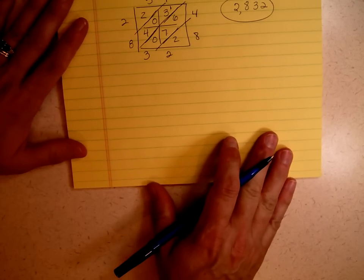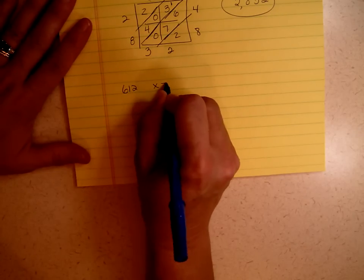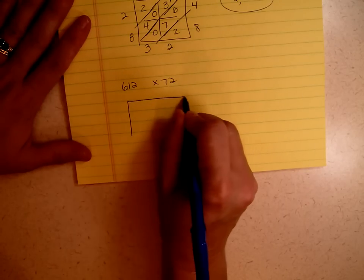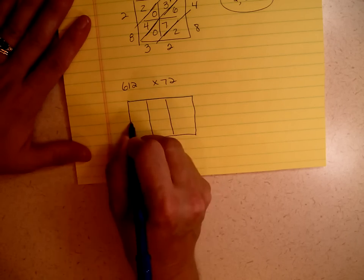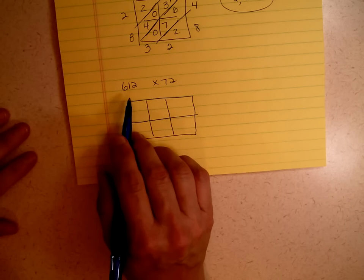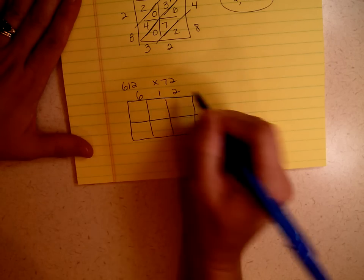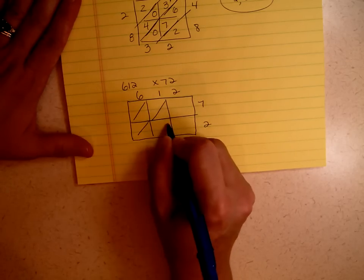This works just as well for when I'm multiplying a 3-digit number by a 2-digit number. You can set up your matrix in a number of ways, whatever works for you. Because multiplication is commutative, it means it doesn't matter if you do 72 times 612, or 612 times 72. I'm going to put my 612 right here. I'm going to put my 72 right here. I'm going to break my boxes up.